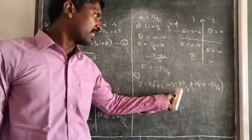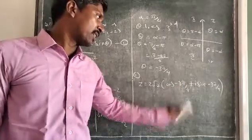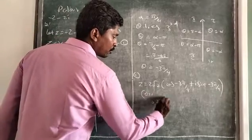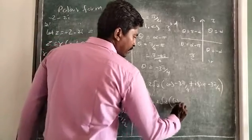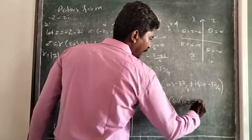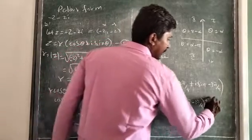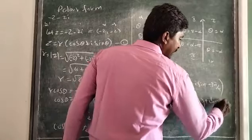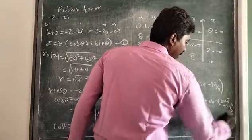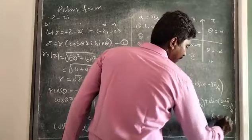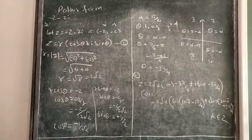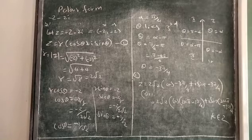So z = 2√2 · (cos(−3π/4) + i sin(−3π/4)). That is the polar form. If you want to write in general form, you can add 2kπ: z = 2√2 · (cos(2kπ − 3π/4) + i sin(2kπ − 3π/4)).